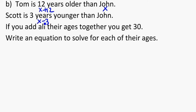If we add their ages together, well that's John plus Tom plus Scott is equal to 30. So adding them all together, we get 30. So there's an equation for us, and now we're going to solve it.